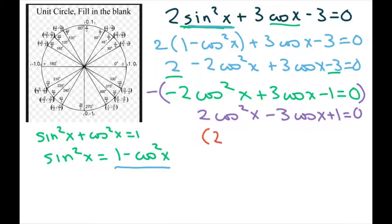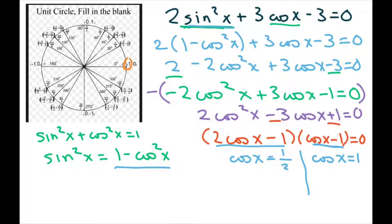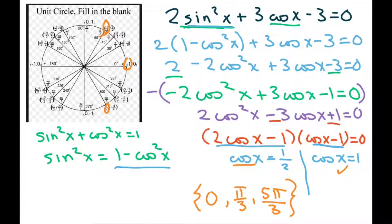Factoring gives (2 cosine of x minus 1)(cosine of x minus 1) equals zero. Setting each piece to zero: from the first factor, cosine of x equals 1/2, and from the second, cosine of x equals 1. Cosine equals 1 at x equals 0. Cosine equals 1/2 at pi over 3 and 5 pi over 3. So those are our three solutions.